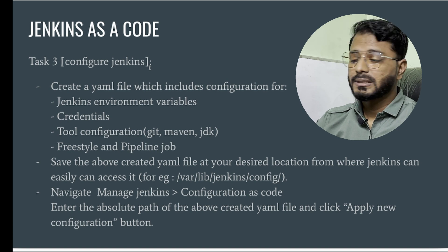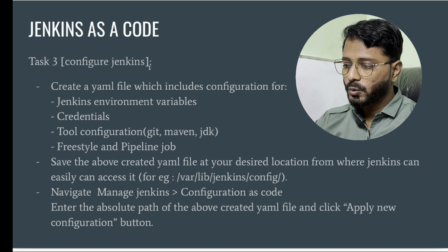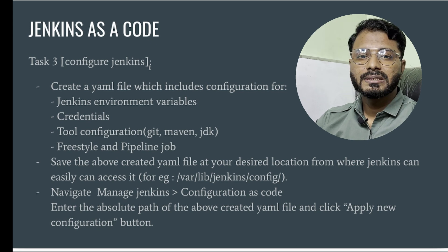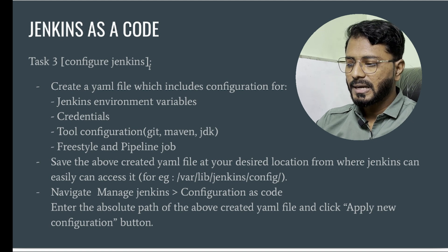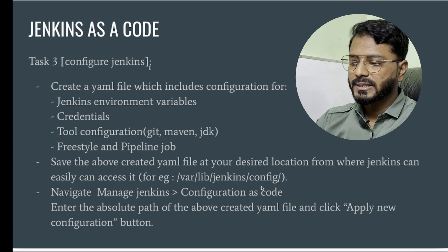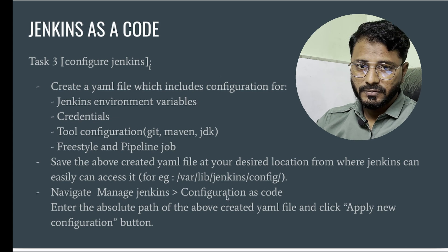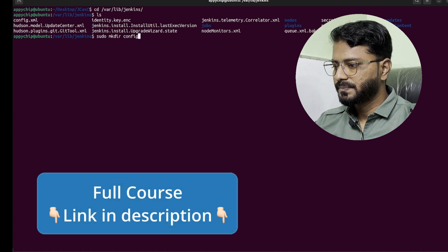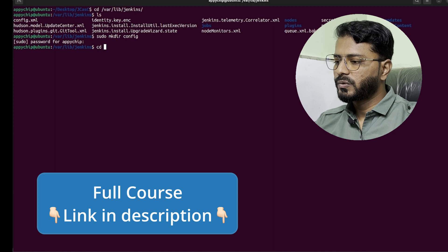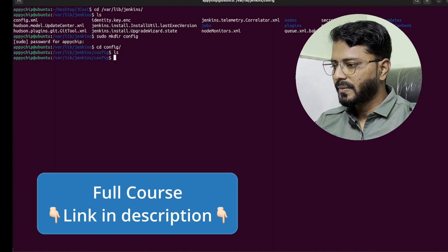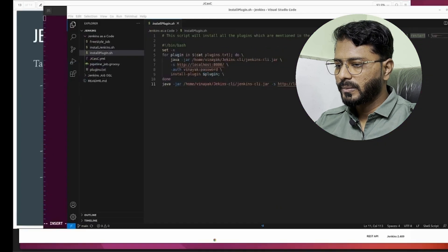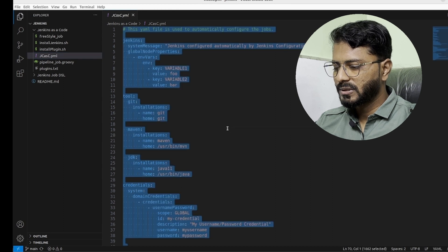Now we have installed the plugins. The next task is to configure Jenkins. We are going to create a YAML file which will include configuration for: Jenkins environment variables, credentials, tools configuration like Git, Maven, and JDK, and a freestyle and pipeline job. We will save this YAML at /var/lib/jenkins/config. Then navigate to Manage Jenkins > Configuration as Code, put the path of this YAML file, and click Apply New Configuration. Let's create the directory mkdir config, go inside it, and create the file using vim, called jenkins.yml.